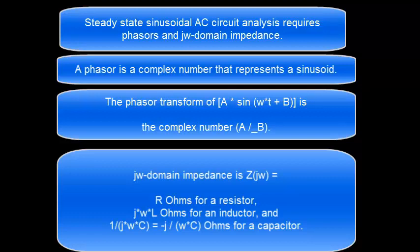The jω domain impedance is R for a resistor, jωL for an inductor, and 1 over jωC for a capacitor. All three have the same units of ohms.